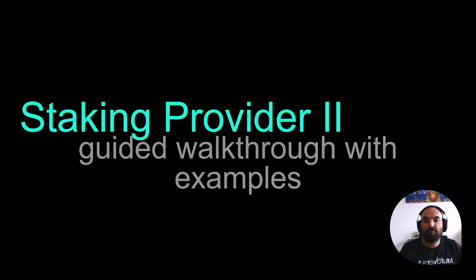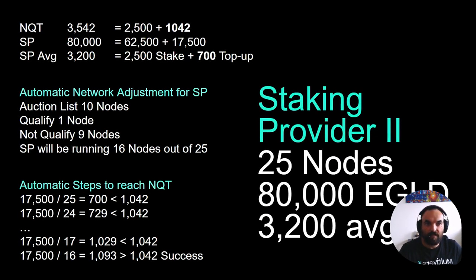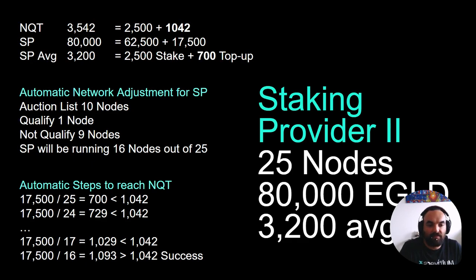We will now continue with staking provider 2 — another example similar to the previous one but with different conditions. Staking provider 2 has 25 nodes and 80,000 EGLD staked. We can easily calculate their staking provider NQT: 3,200, which means 700 top-up per node. The network parameters are the same as the previous example — NQT is set at 3,542, meaning 1,042 top-up needed per validator. From our calculations, staking provider 2 is missing 342 top-up per node.